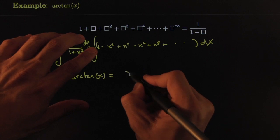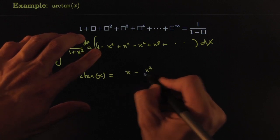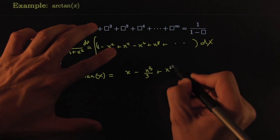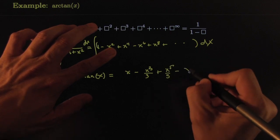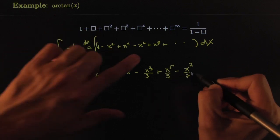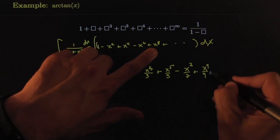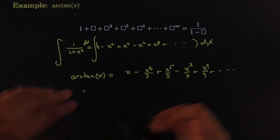On the right hand side, that's equal to x minus x squared—x to the third over three, plus x to the five over five, minus x to the seventh over seven. I'm just integrating all of these term by term: x to the nine over nine and so on and so forth.